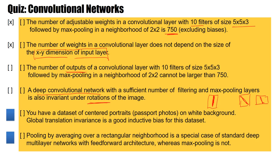Next point: you have a data set of centered portraits — think of passport photos on white background. Global translation invariance is a good inductive bias for this data set. If you think it's correct, raise your hand. And no, this is not correct. It's centered portraits, so there is no reason we should have shift invariance over a large distance.